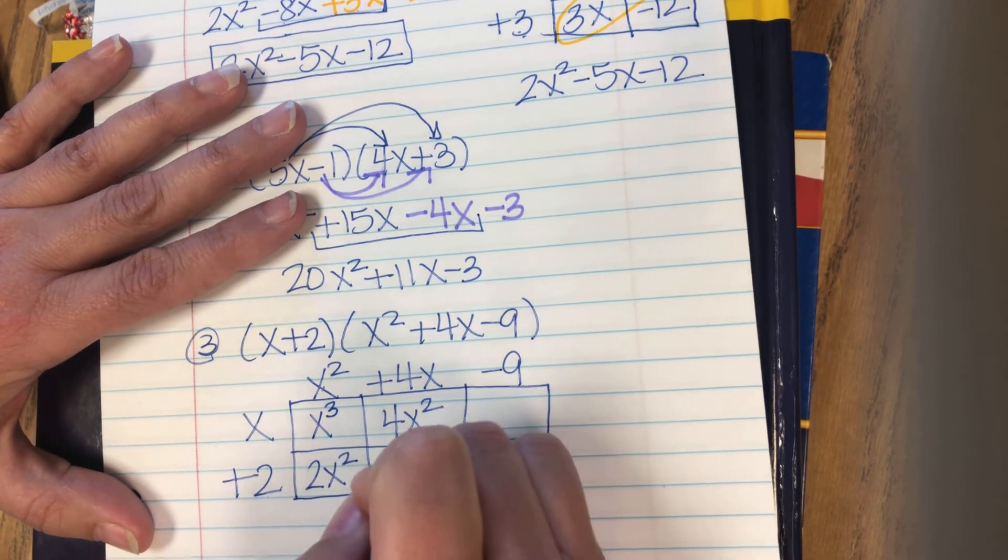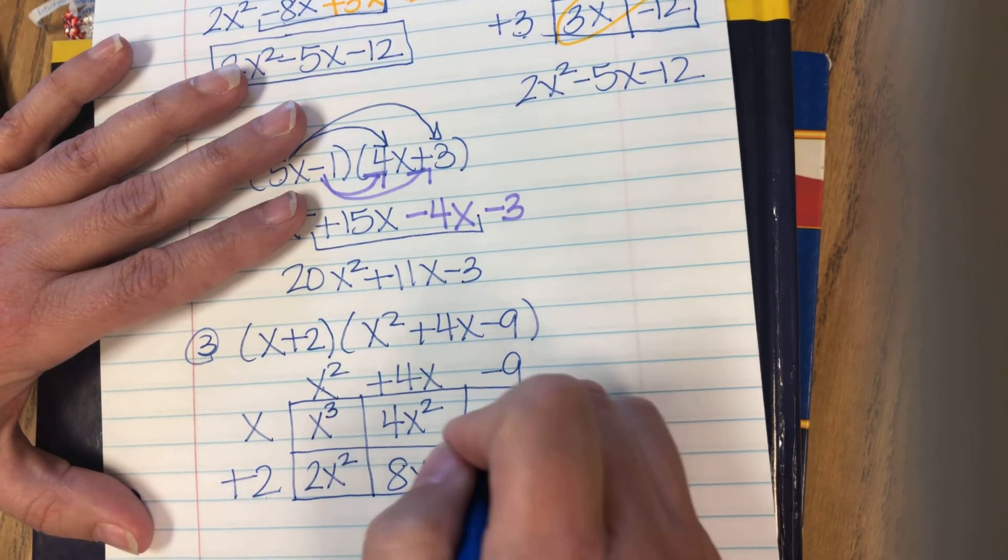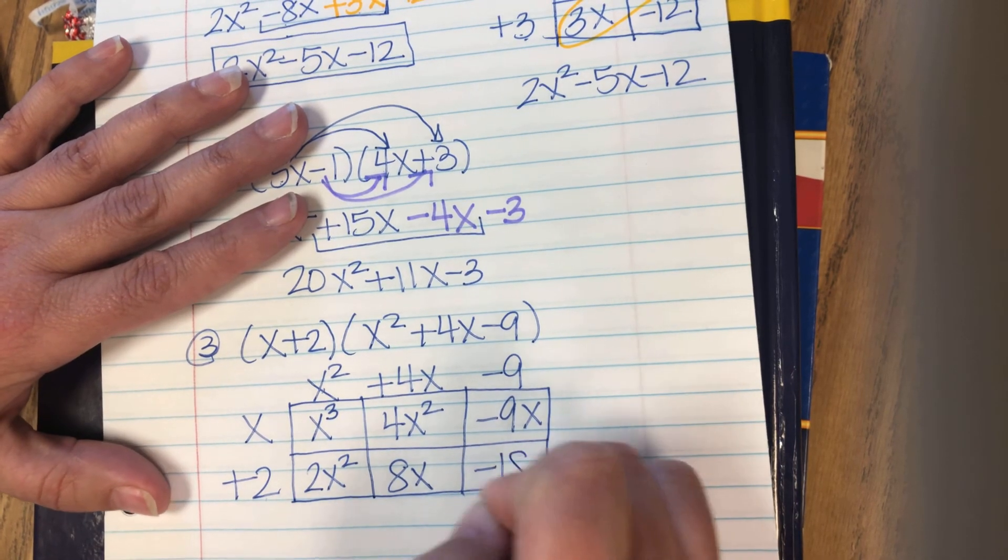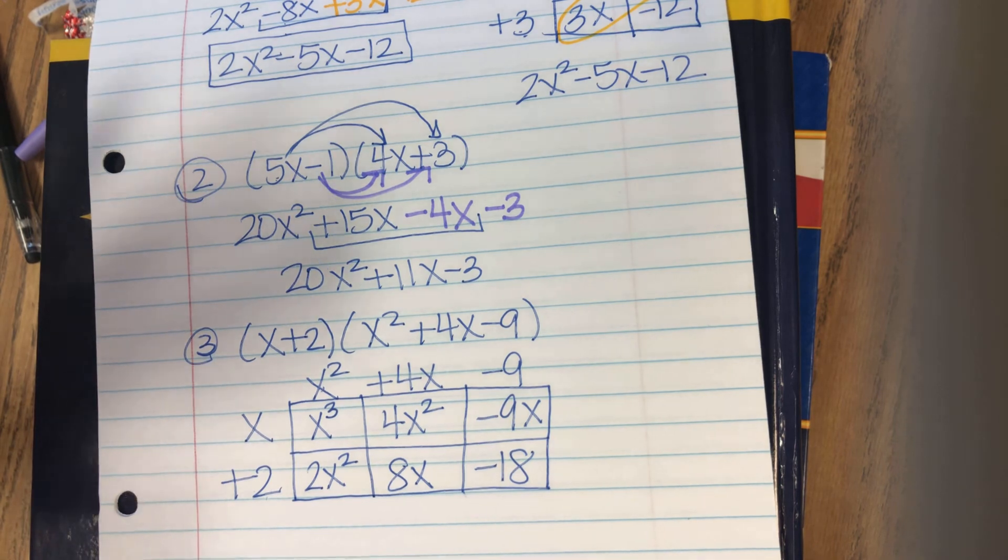4x times 2 is 8x. Negative 9 times x is negative 9x. And negative 9 times 2 is negative 18. So the box method for this problem keeps it kind of organized for me.